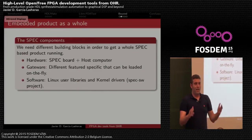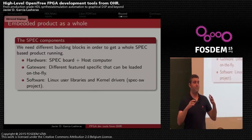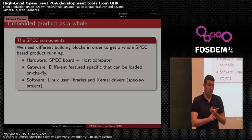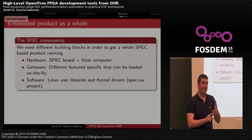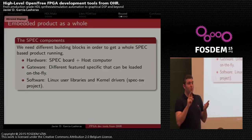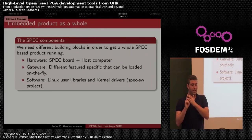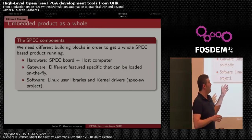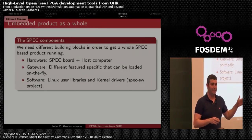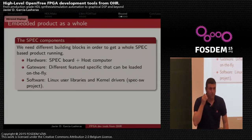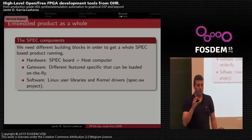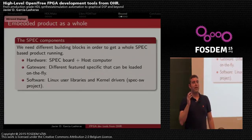To run a whole product based on the SPEC, we need different building blocks. We need the hardware — the SPEC board itself and a host computer. We need the gateway: in the Open Hardware Repository there are different feature-specific gateway designs that can be loaded on the fly into the FPGA on the SPEC board. We also need software support including both the Linux user library and the kernel drivers.